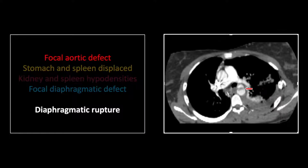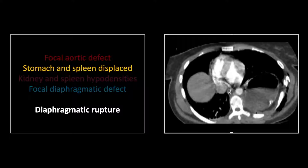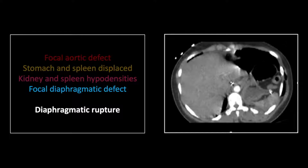You can see the contour abnormality of the aorta just past the isthmus in a fairly typical location. The stomach is elevated and occupies the inferior portion of the left hemithorax. On a lower cut, the spleen is also elevated with a peripheral wedge-shaped hypodensity suggestive of a thromboembolic infarct, most likely related to the upstream aortic injury.